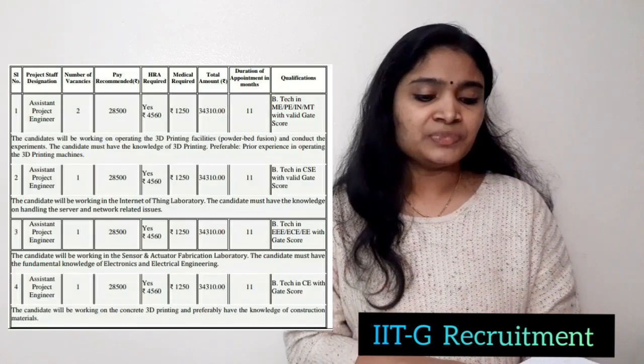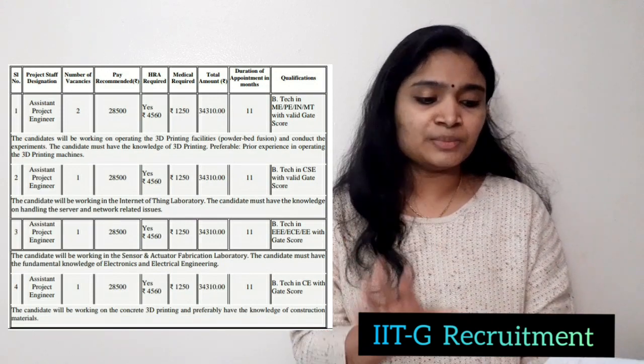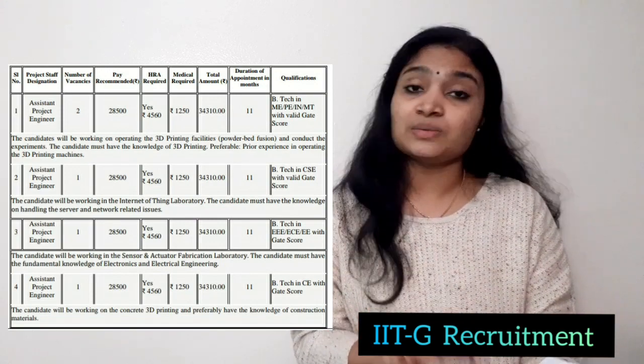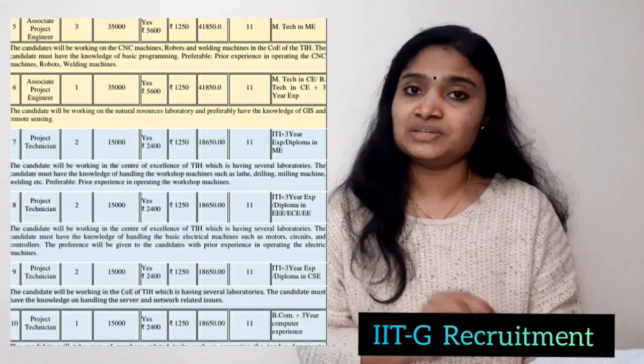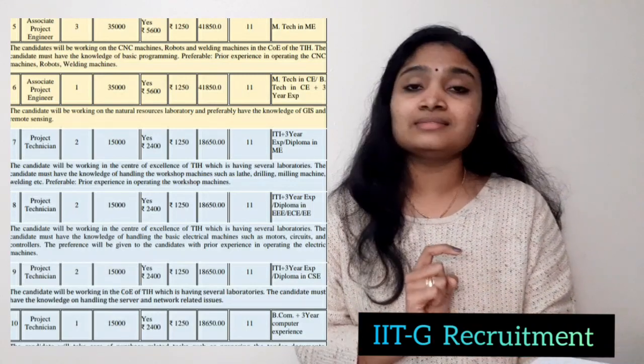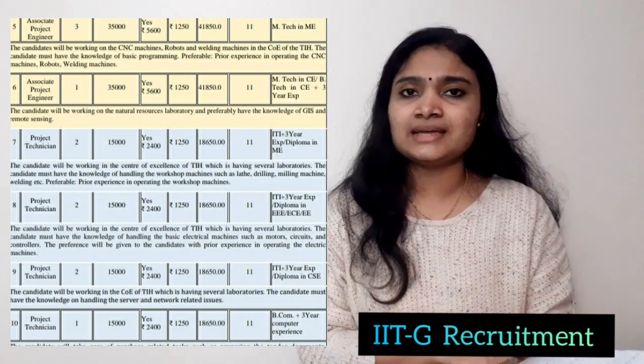Now let us see the qualification details. For Assistant Project Engineer, you should have a B.Tech in Mechanical Engineering, Computer Science, Electronics and Communication, or Electrical and Electronics, along with a valid GATE score. For Project Technician, the qualification is a three-year diploma, or ITI plus three years of experience.